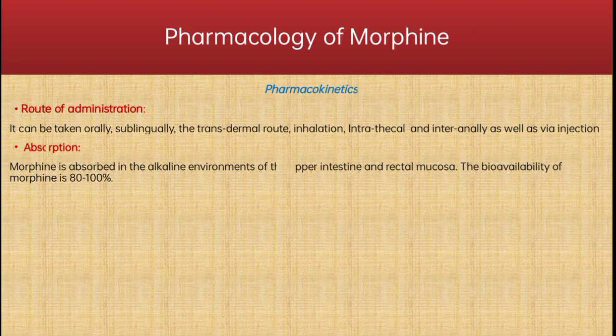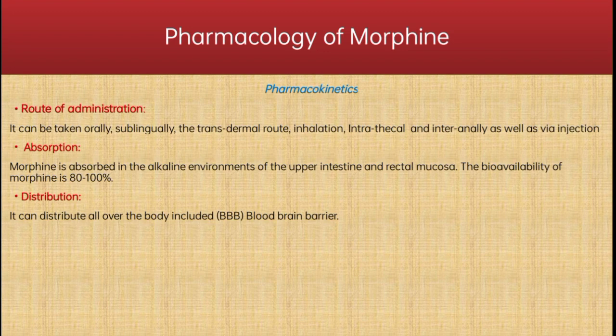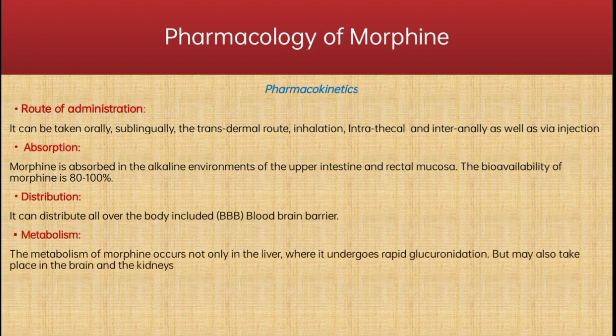In absorption, morphine is absorbed in the alkaline environment of the upper intestine and rectal mucosa. The bioavailability of morphine is 80 to 100%. Regarding distribution, it can be distributed all over the body including across the blood-brain barrier. The metabolism of morphine occurs not only in the liver, where it undergoes rapid glucuronidation, but may also take place in the brain and the kidneys.